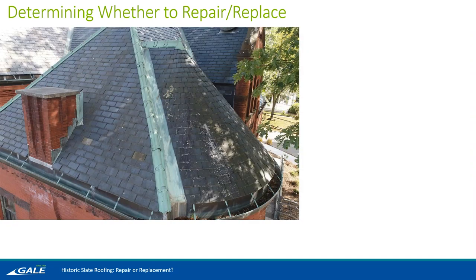When thinking about the slate roof, there are other things to consider — for example, lichen growth. Lichen is often attached to slate and actually excretes an acid that can deteriorate the slate, and it's very difficult to remove. So if you have widespread lichen growth but your slate below still looks fine, you might want to think about those larger areas actually requiring replacement.